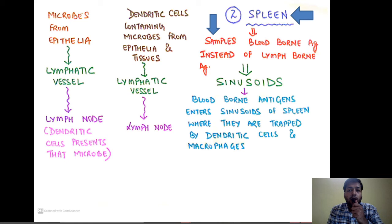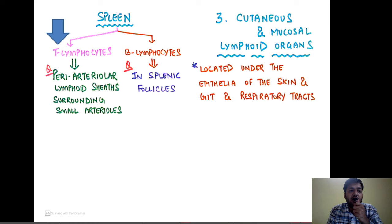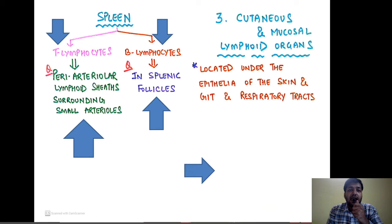The spleen samples blood-borne antigens instead of lymph-borne antigens and is composed of multiple sinusoids. Blood-borne antigens inside the sinusoids are trapped by dendritic cells and macrophages. Inside the spleen, T lymphocytes are present in the periarteriolar lymphoid sheath surrounding the small arterioles, whereas B lymphocytes are present in the splenic follicles.